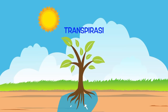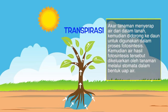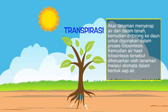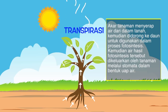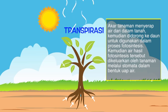Seperti apa sih transpirasi itu? Jadi begini adik-adik, akar tanaman menyerap air dari dalam tanah, kemudian didorong ke daun untuk digunakan dalam proses yang dinamakan fotosintesis. Kemudian air hasil fotosintesis tersebut dikeluarkan oleh tanaman melalui stomata dalam bentuk uap air. Inilah yang disebut dengan proses transpirasi. Paham kan?